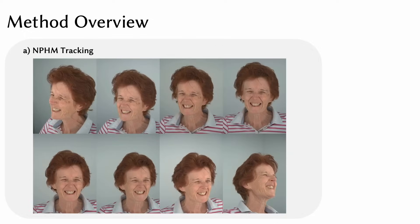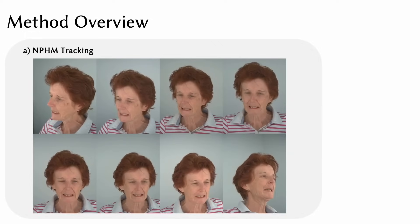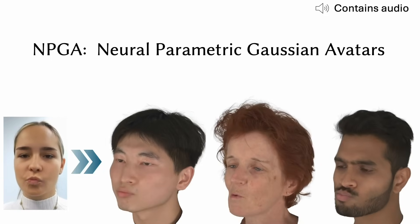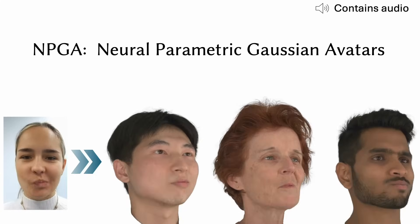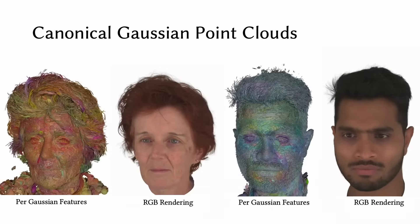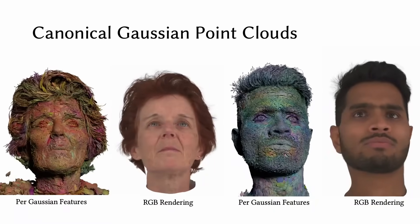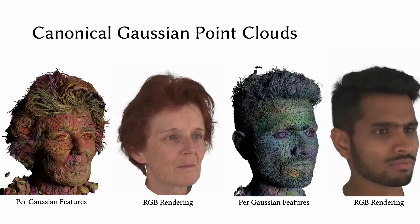They did do an explainer video — it's quite technical, so I'm going to play select sections and explain in simpler terms. They present NPGA, Neural Parametric Gaussian Avatars, for high fidelity and controllable avatar creation from multi-view video data. Their core idea is to leverage the rich expression space and deformation prior of neural parametric head models in combination with efficient rendering of 3D Gaussian splatting. Their avatars consist of a canonical Gaussian point cloud with latent features attached to each primitive.